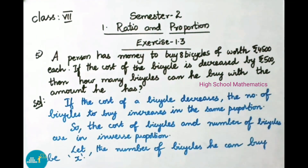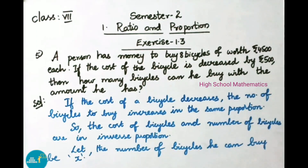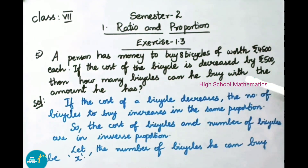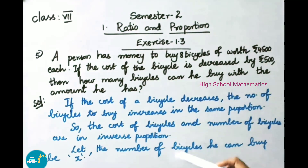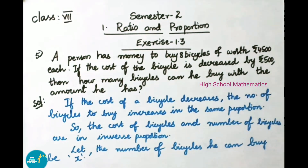Observing this question: cost of the bicycle is first Rs. 4,500. Later, they have decreased the amount on each bicycle by Rs. 500. So, here the cost of the bicycle is decreasing, so the number of bicycles he can buy increases in the same proportion. So, the cost of bicycles and number of bicycles are in inverse proportion.